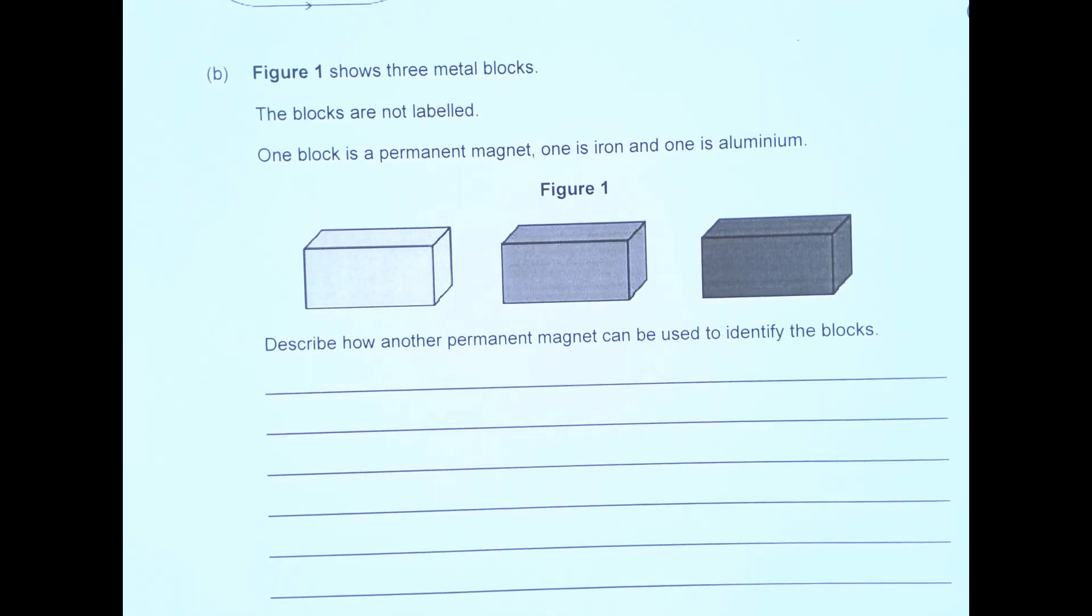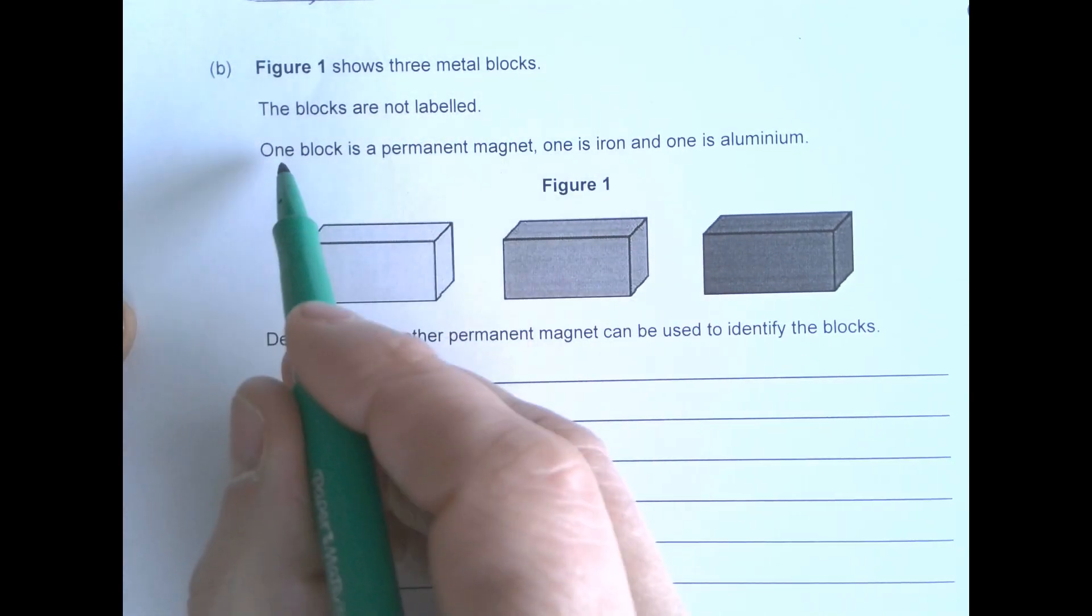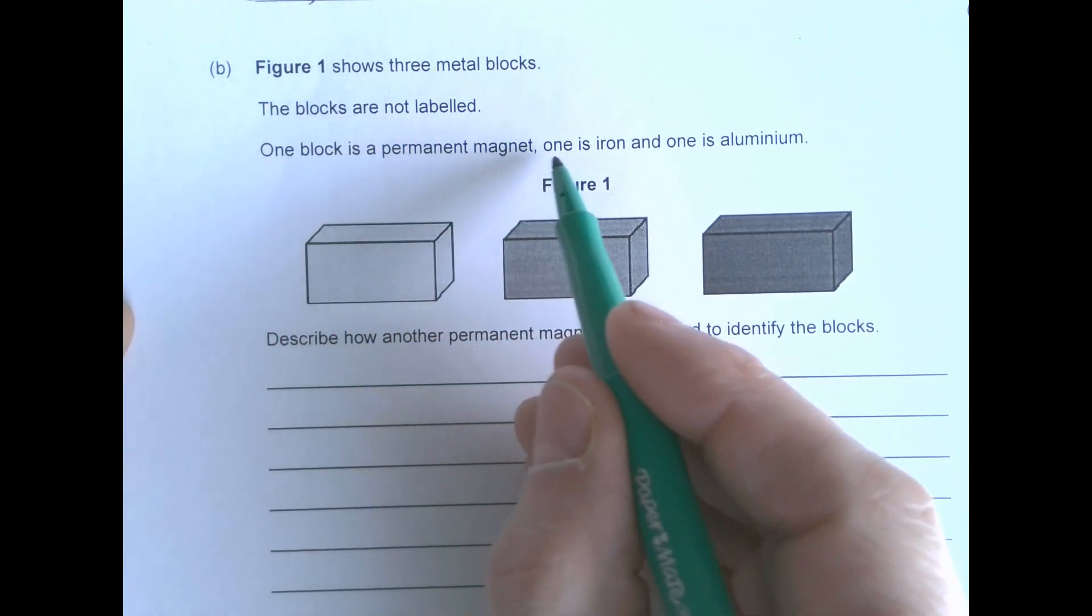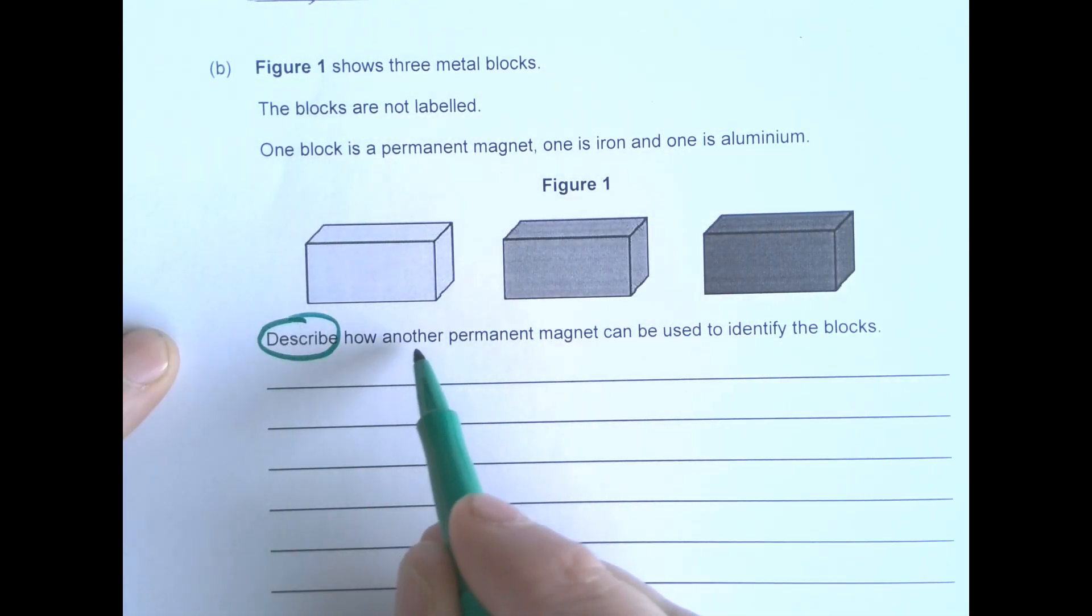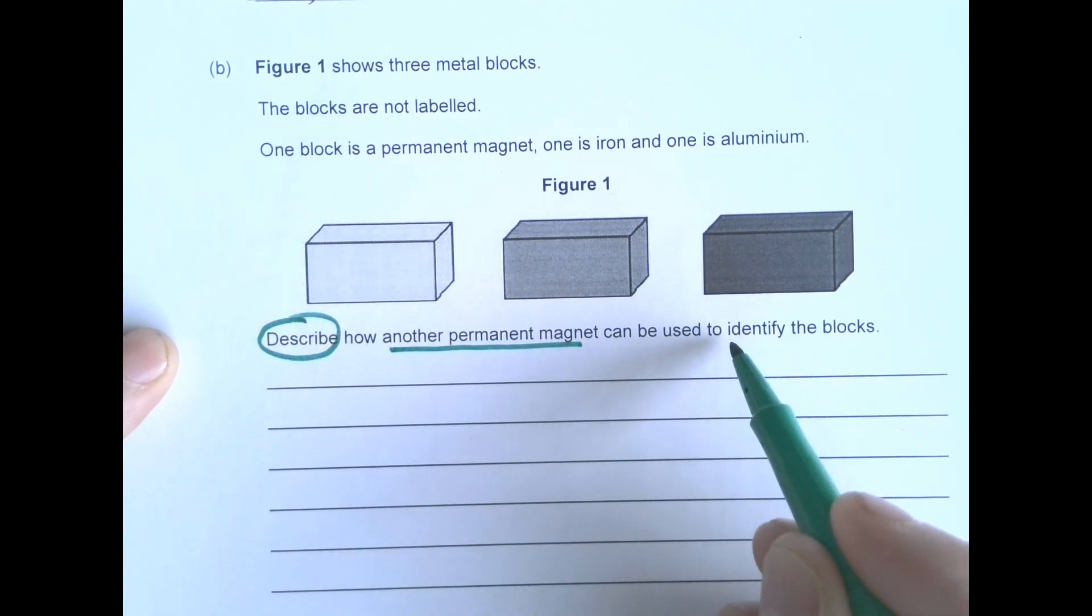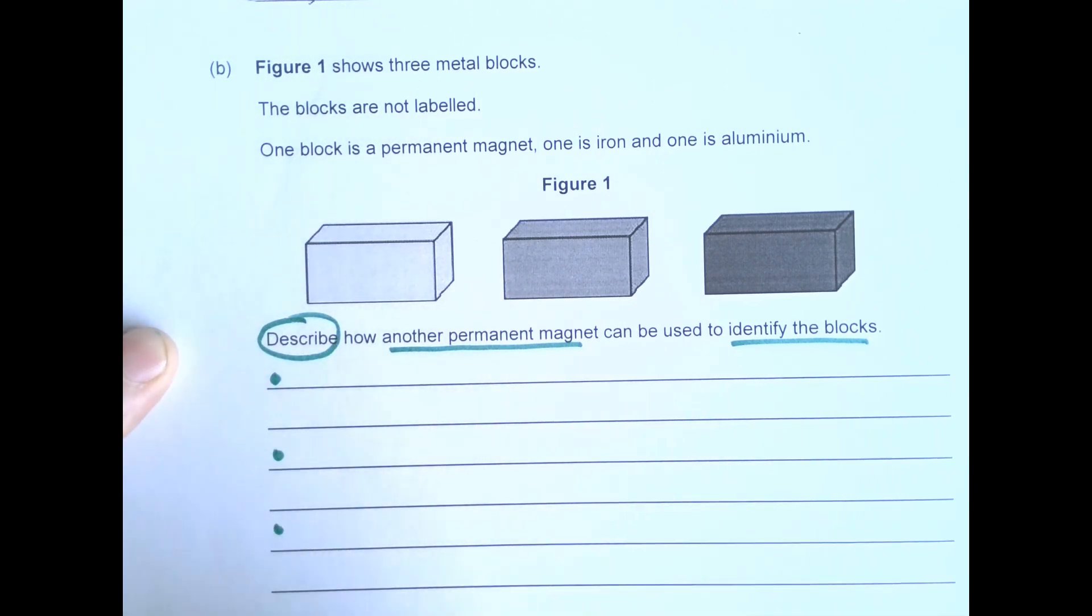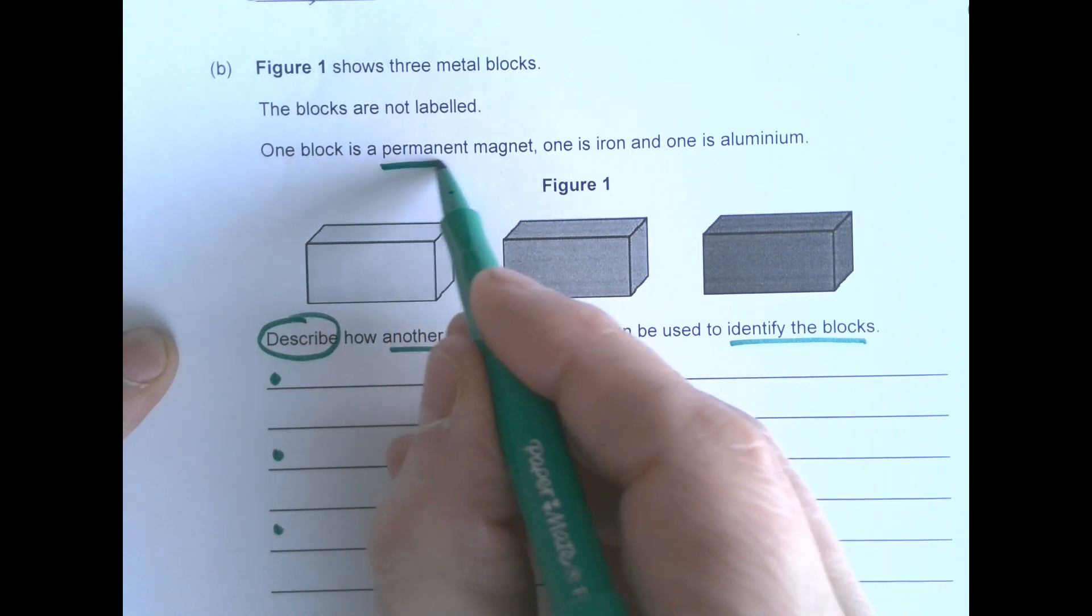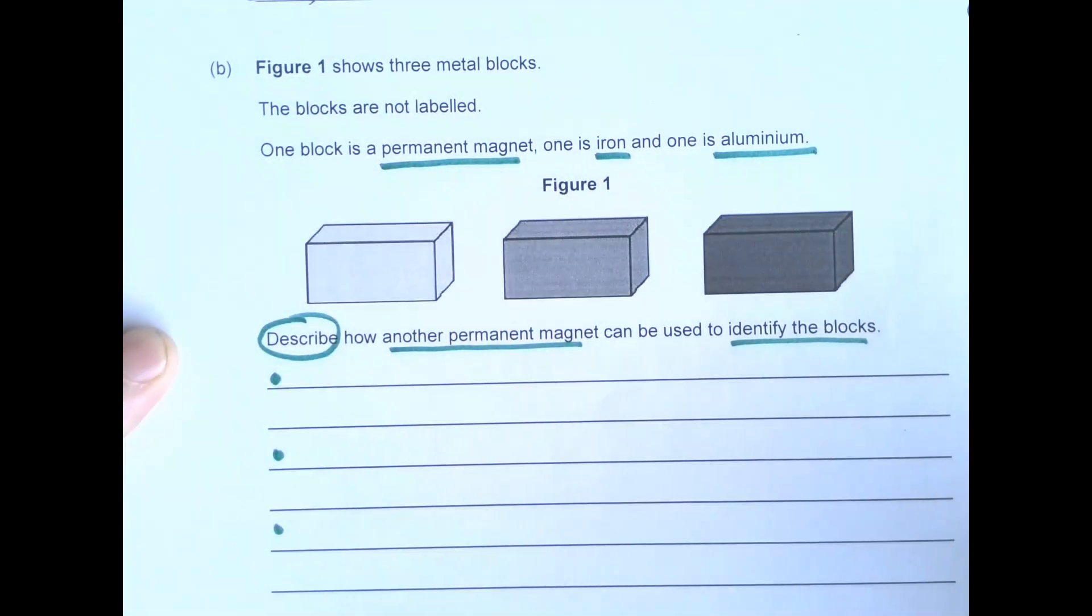Part B. Figure one shows three metal blocks. The blocks are not labeled. One block is a permanent magnet, one is iron and one is aluminium. Describe how another permanent magnet can be used to identify the blocks. So there are three marks, three bullets. So one of them is a permanent magnet, one is iron and one is aluminium. So what do we know about those things?